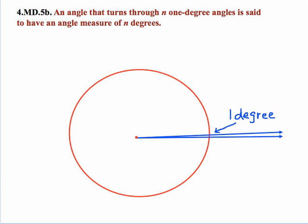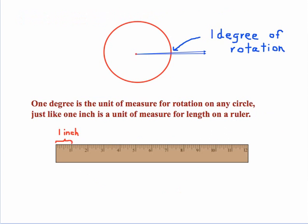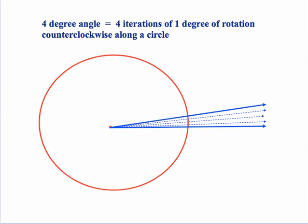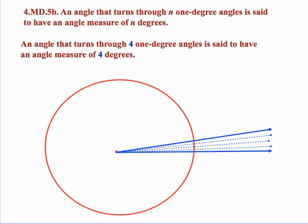It might be easier for students to relate to something that they know such as linear measure. So 1 degree is the unit of measure for rotation on any circle just like 1 inch is a unit of measure for length on a ruler. So they're synonymous except one is dealing with circular rotation and the other is dealing with straight line linear distance. So 4 inches for example would be 4 iterations of 1 inch each laid end to end. So that's what 4 inches really is. In a similar manner a 4 degree angle would be 4 iterations of a 1 degree angle of rotation counter clockwise along a circle. If we look at the statement and substitute numbers for the variables it makes it a lot easier to understand. So if we take the example that we just did an angle that turns through 4 1 degree angles is said to have an angle measure of 4 degrees.